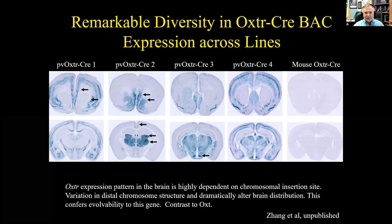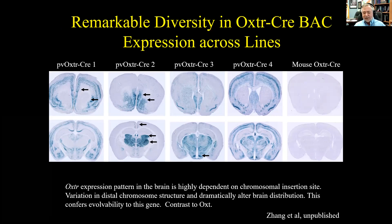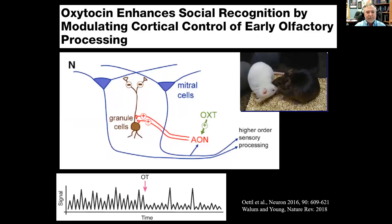Some elements were conserved with the vole pattern, others were very different, and some expression looked like vasopressin receptor patterns. To me, this suggests that this receptor gene is very sensitive to micro changes in DNA sequence that can allow the receptor expression pattern to evolve — and that's where the evolutionary plasticity of this system comes from.